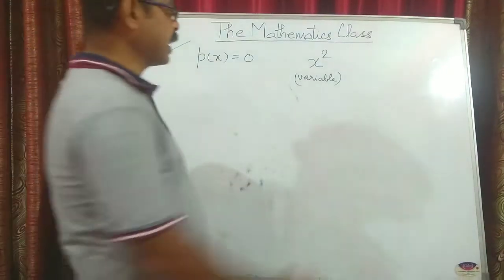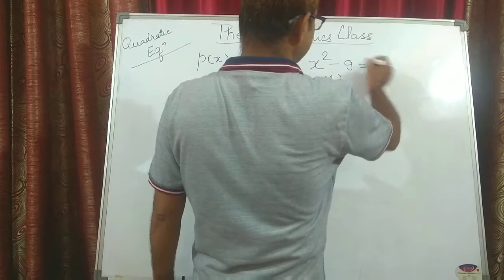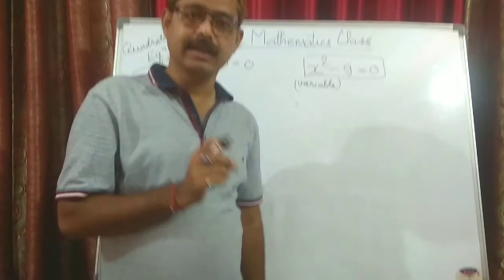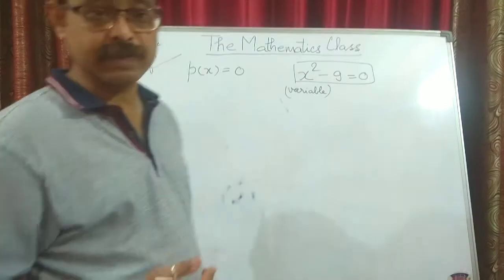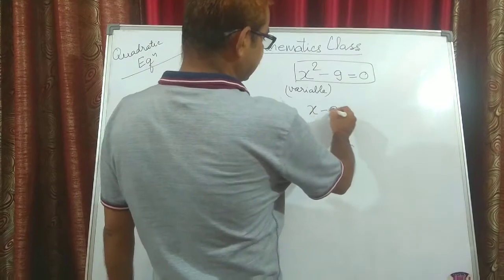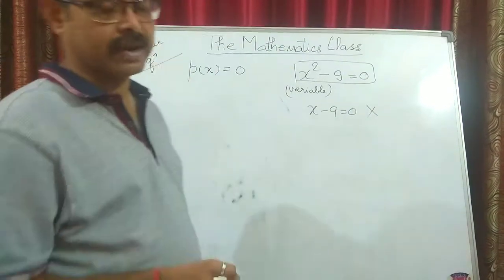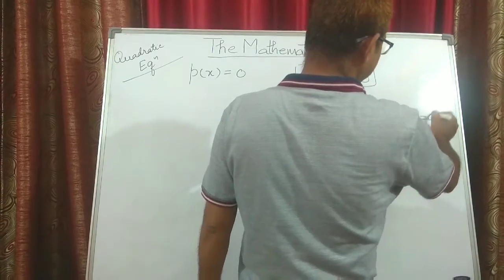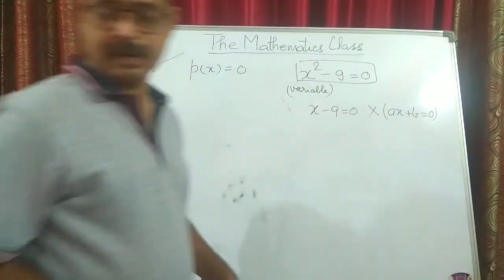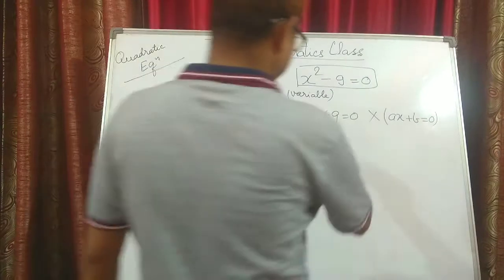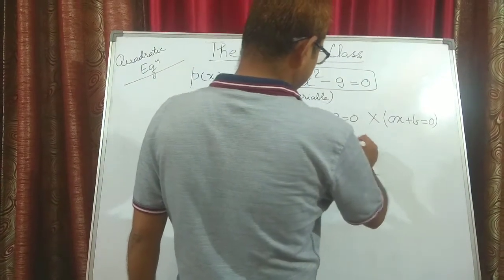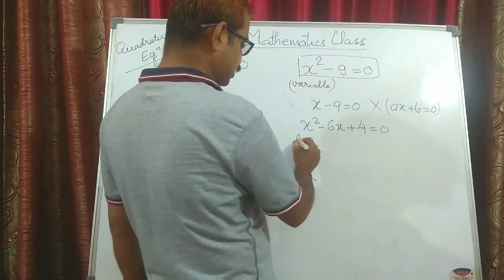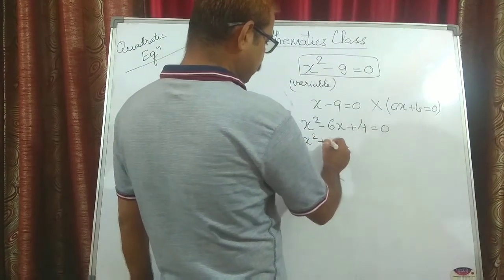For example, X squared minus 9 equals 0 is a quadratic equation because the maximum power of X is 2. If I write X minus 9 equals 0, this is not a quadratic equation — this is a linear equation, and its general form is AX plus B equals 0. Similarly, X squared minus 6X plus 4 equals 0 is a quadratic equation, and its general form is AX squared plus BX plus C equals 0.